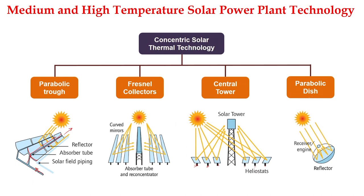The fourth category is parabolic disc. This is a parabolic disc, solar radiation falls on the reflector and this is the receiver. Along with it, an engine is attached — normally an external combustion engine like a Stirling engine — for generation of electricity. We will analyze parabolic trough first and then go for computation of all four technologies.